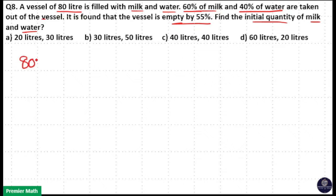So there is a vessel of 80 liter capacity filled with milk and water. But we don't know the initial quantity of milk and water, we need to find it.